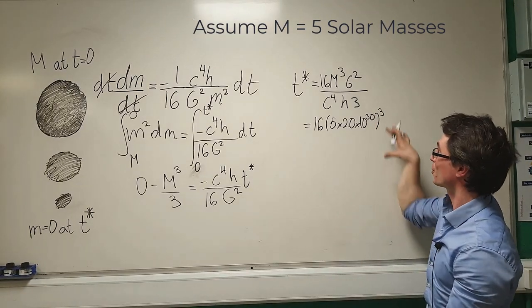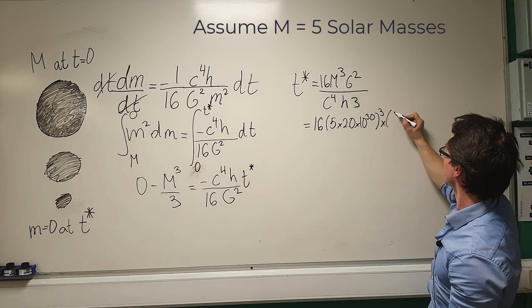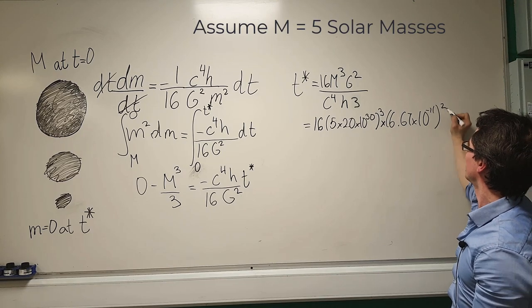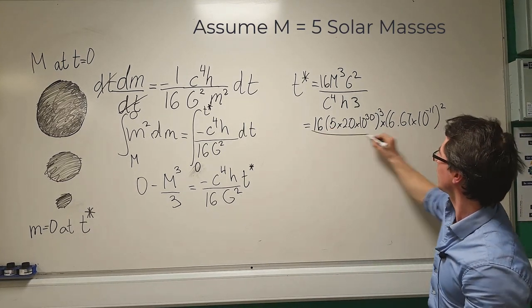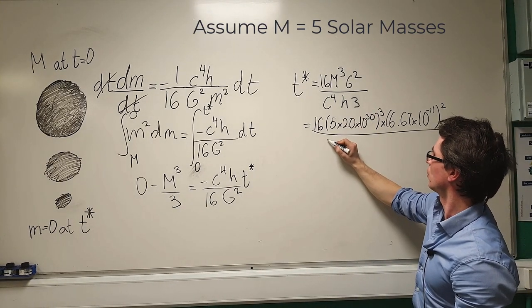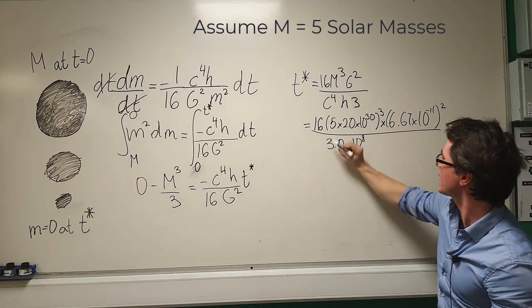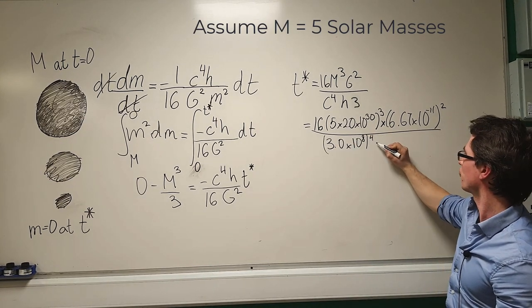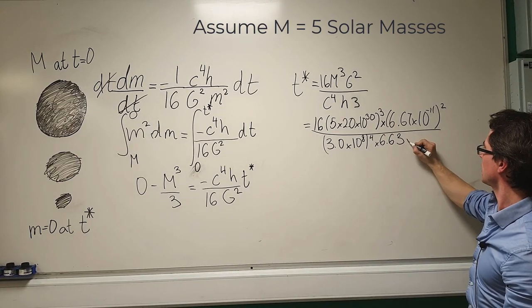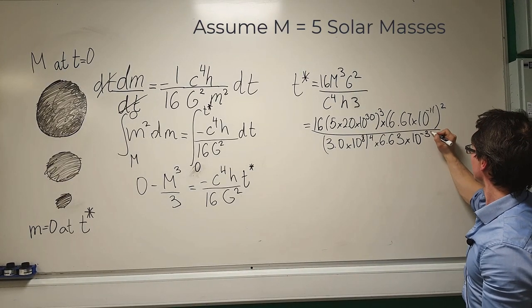I'm going to be getting a pretty large number because I'm cubing this multiplied by g squared now this is equal to 6.67 times 10 to the power of minus 11 then I'm going to be squaring that. Let's divide that by c to the power of 4 which is equal to about 3.0 times 10 to the power of 8 and that's raised to the power of 4 multiplied by Planck's constant which is approximately 6.63 times 10 to the power of minus 34.